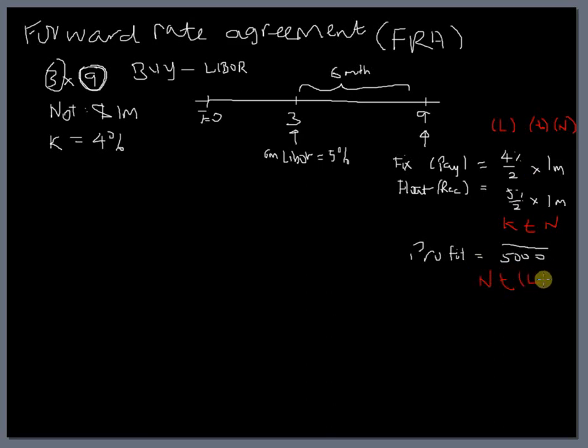Which will be paid as at T equal to 9 months. So you can cut short these two formulas by writing the profit as notional times time into LIBOR minus fixed rate. So this is basically the payoff that we expect at the end of 9 months. Once we know the LIBOR as at the 3rd month.